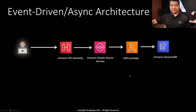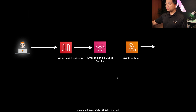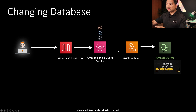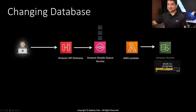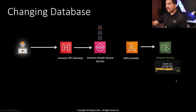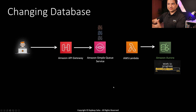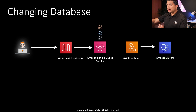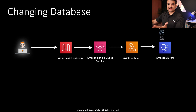Going back to the database change or maintenance scenario: all you need to do is disable the trigger between SQS and Lambda. All messages are stored in the SQS queue, so the user sees no error messages — the APIs are up, and all they're doing is inserting messages into SQS. Meanwhile, in the backend, you can change the database from DynamoDB to Aurora or RDS. Once the maintenance is done and the database is up and running, you reactivate the trigger and the messages get processed and inserted into the database. That's how Dr. B achieved this.